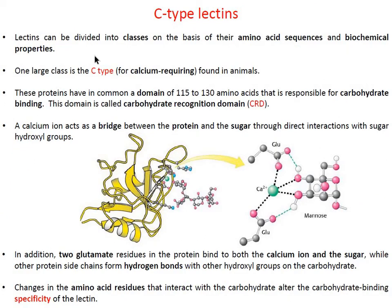There are several classes of lectin proteins divided based on their amino acid sequences or biochemical properties. One of the largest classes is C-type lectin proteins. The 'C' indicates that they require a calcium ion for their function, and they are generally found in animals, though they are ubiquitously found in a variety of organisms. C-type lectins have a common domain of 115 to 130 amino acids responsible for carbohydrate binding, called the carbohydrate recognition domain (CRD).